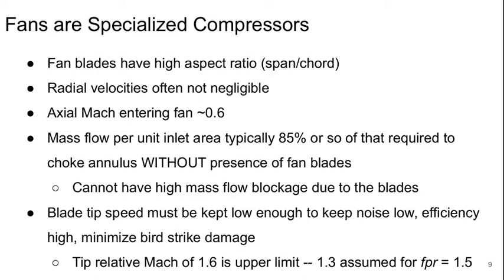Also, because of the high aspect ratio, the radial velocities are often not negligible and can be significant parts of the overall velocities, which requires a more complex analysis approach. The axial velocities entering a modern jet engine fan will normally be around Mach 0.6, and that means that the mass flow per unit area is going to be up around 80–85% of that required to choke the annulus without any presence of fan blades.